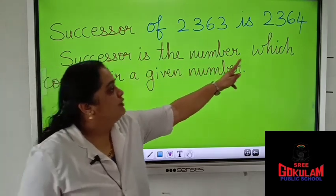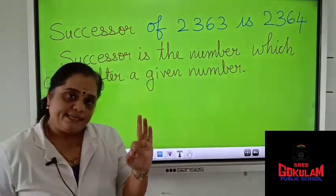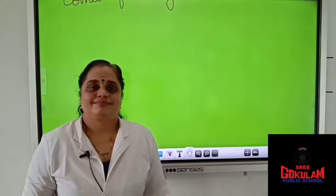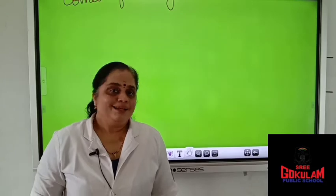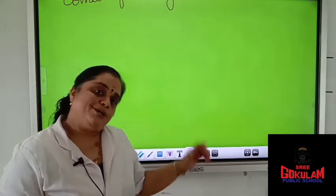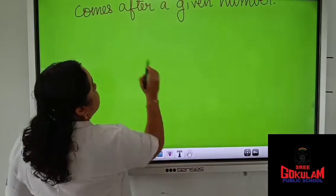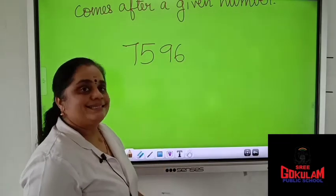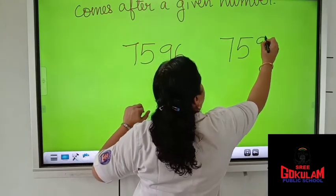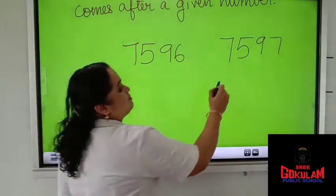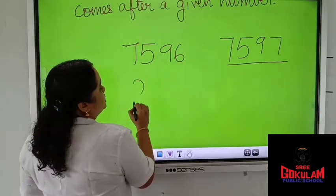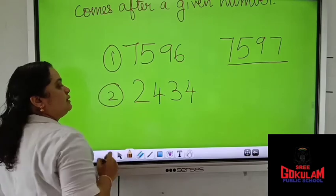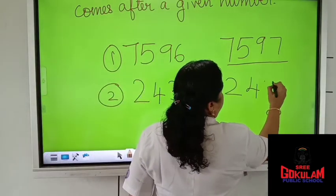Successor is the number which comes after a given number. One number is given; after that number, whatever number comes, that is called the successor. For example, which is the successor of 7,596? It is 7,597. What will be the successor of 2,434? 2,435.